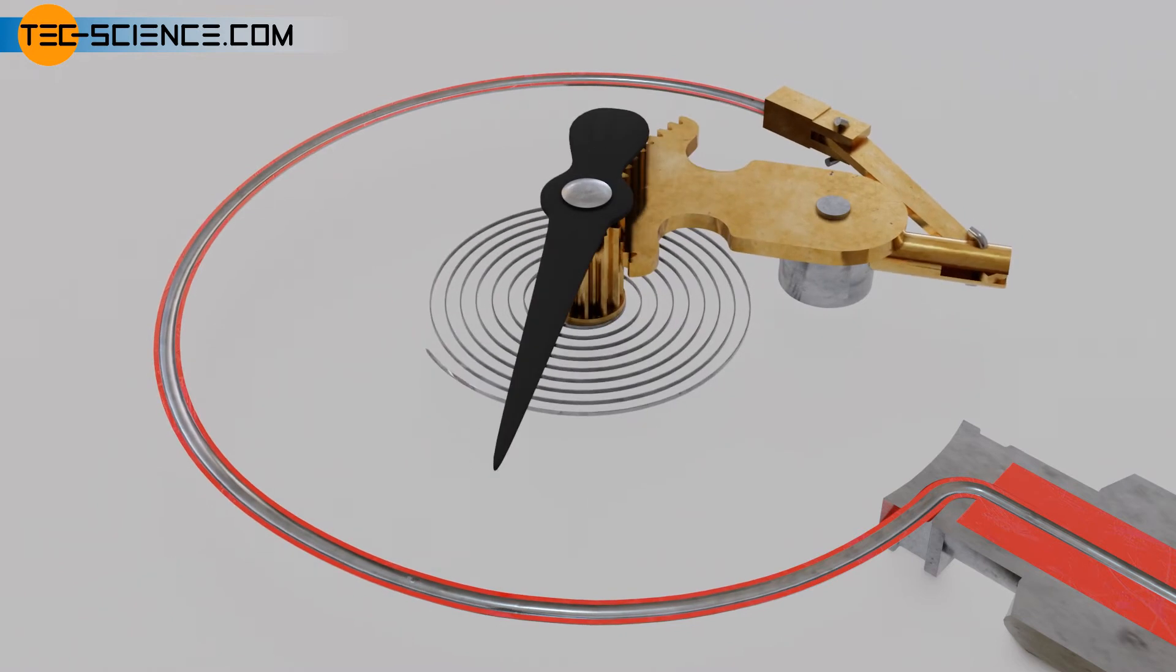In order to increase the measuring sensitivity, the relatively small deformation of the tube during pressure rise is not directly output on a scale, but is first amplified by a lever mechanism with rack and pinion.